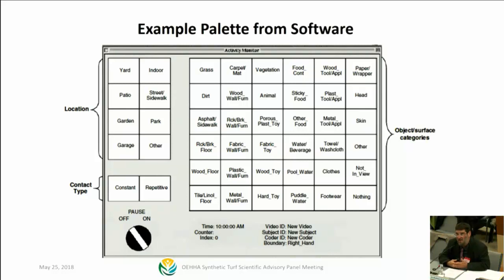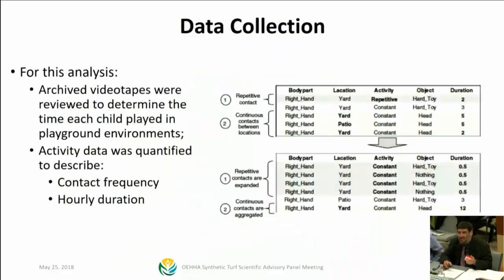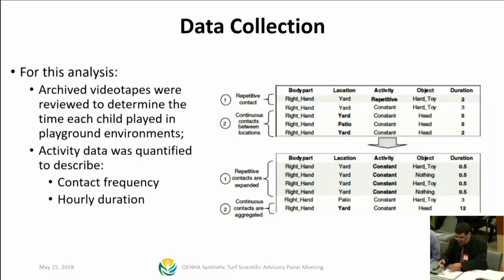When the videotapes are scored by students, they have this palette of information. When events occur, they can code the type of surface, type of object, the location, and the contact type. This goes into a dataset that can be extracted and analyzed to quantify behaviors and activities. Specifically, the group looked at both contact frequency and also duration of contact — so if a child is putting something in their mouth, the duration is recorded too.